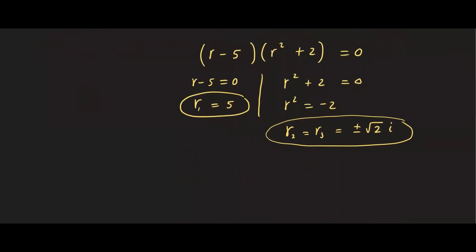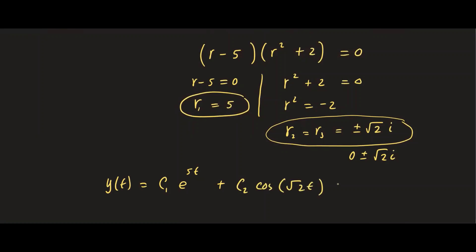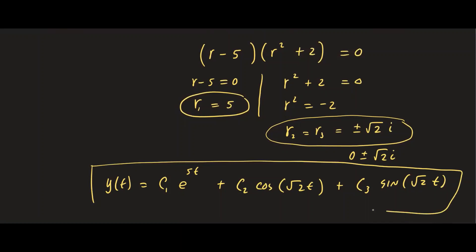The general solution is y of t equals c one e to the five t, plus the complex root contribution where alpha is zero and beta is square root of two. So we have c two cosine of square root of two t, plus c three sine of square root of two t. That is the general solution to this higher order differential equation.